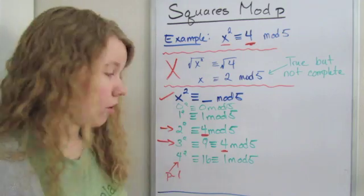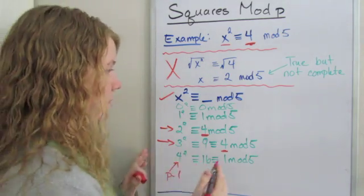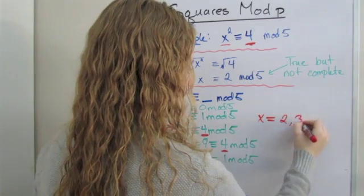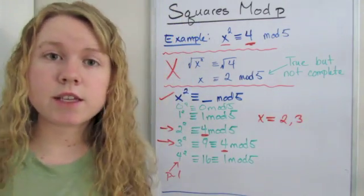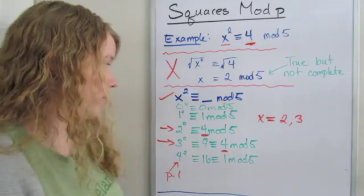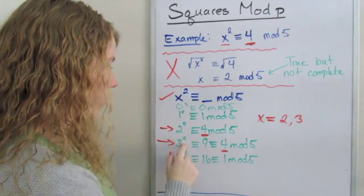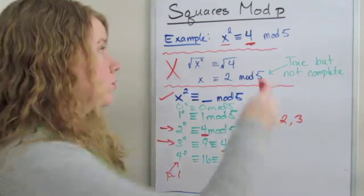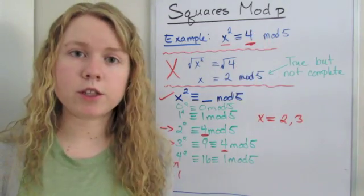are the solutions to this problem. So in this case x equals 2 and 3 because 2² and 3² are both 4 mod 5, which was the original problem that we were trying to find solutions for.